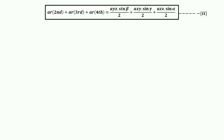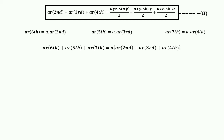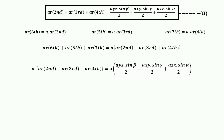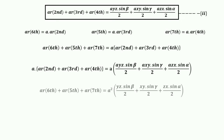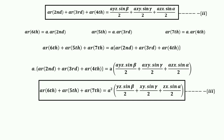Returning to equation 2, we know areas 5, 6, and 7 each equal a times areas 3, 2, and 4 respectively. So area 5 + area 6 + area 7 = a·(area 2 + area 3 + area 4). Multiplying equation 2 by a gives equation 3: area 5 + area 6 + area 7 = a²·yz·sin(β)/2 + a²·xy·sin(γ)/2 + a²·xz·sin(α)/2.